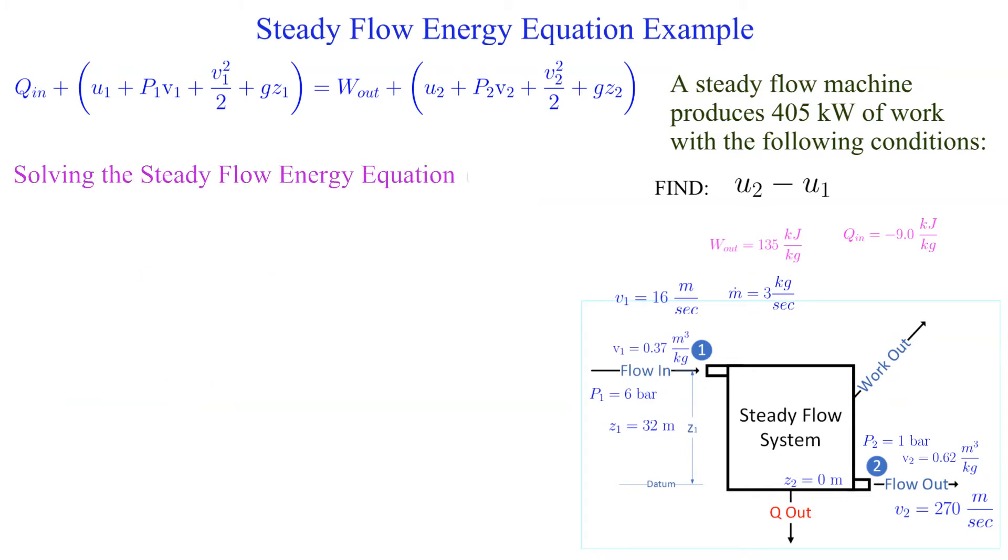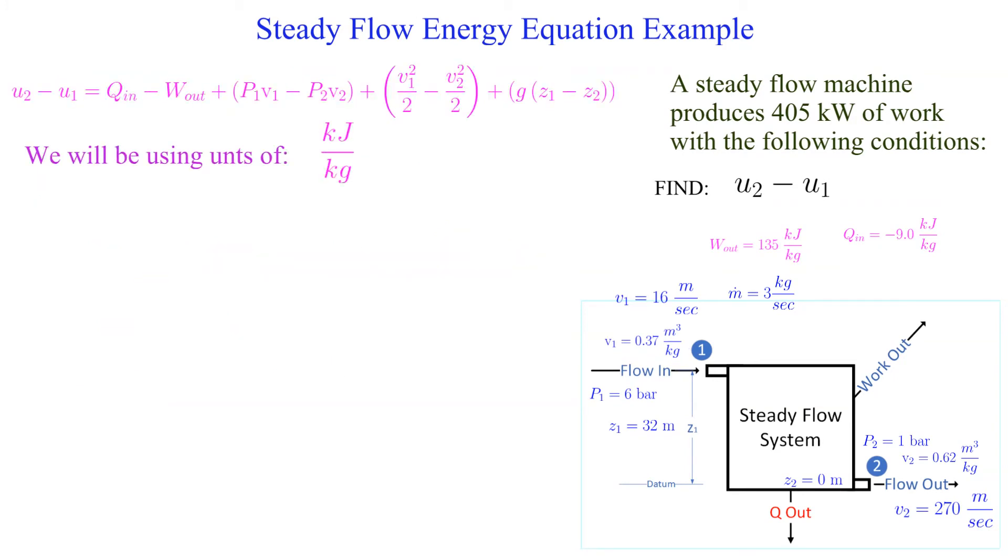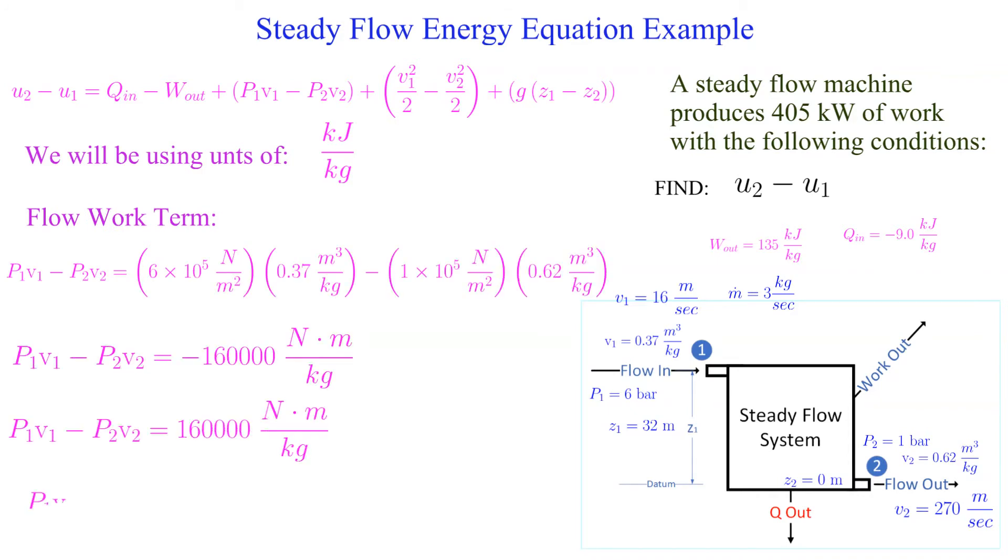Now let's solve the steady flow energy equation for the unknown. Let's start with the flow work term. We're using the SI system so the units come out clean, but we have to keep in mind that we are working in kilojoules per kilogram.